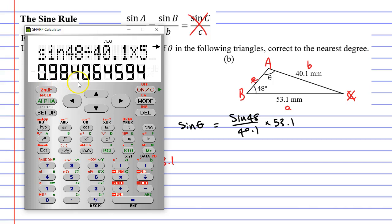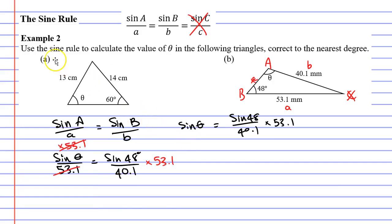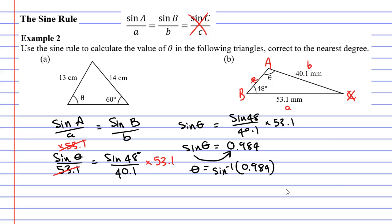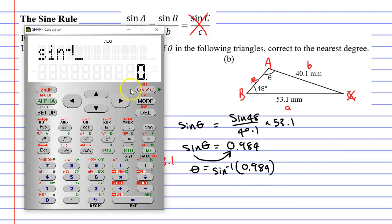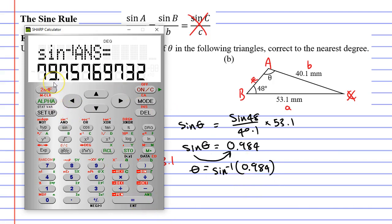We get a long decimal — we really don't want to round early on. But just for now I'll round it to 0.984. So sine θ equals 0.984. We need to bring sine to the other side, giving us θ equals sine to the negative 1 of 0.984. Remembering that we kept that number in our calculator, if I just go second function sine it will automatically put the number in. Press equals, and there I get my angle — to the nearest degree that's 80 degrees.